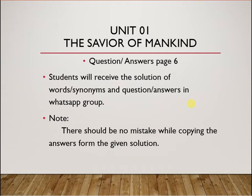As we all know, in the previous class we discussed this chapter — the main important things, the land of Arabia, the condition of Arabia, the atrocities, and the problems that the Holy Prophet, peace be upon him, faced. At the end we discussed that after the arrival of the Holy Prophet, the Arabs felt that now they have a complete code of life and are free to act accordingly.